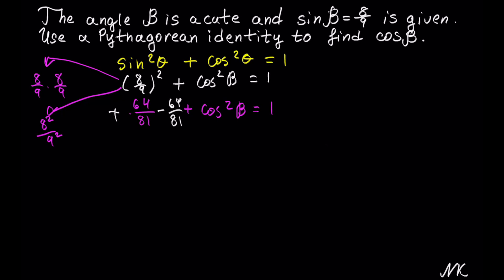Whatever we do to one side, we have to do the same thing to the other side, so we get 1 - 64/81. And we get 64/81 - 64/81 adds up to 0.